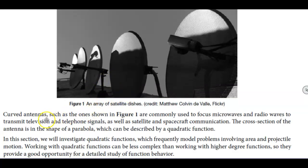Now curved antennas such as the ones that you see in this picture are commonly used to focus microwaves and radio waves to transmit television and telephone signals as well as satellite and spacecraft communication. The cross-section of the antenna is in the shape of a parabola which can be described by a quadratic function.